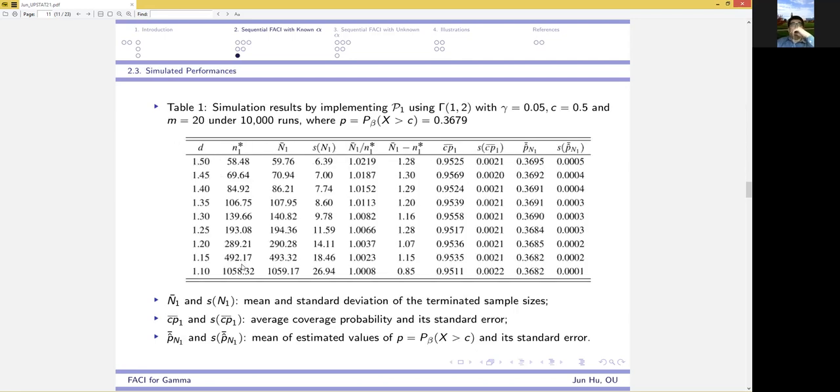To verify these theoretical findings, we run simulations by implementing the procedure P1 using gamma of 1, 2 with these values under 10,000 runs. We compare the magnitude of the optimal fixed sample size and the average of the final sample sizes, and we find that they are close to each other, which justifies the asymptotic efficiency.